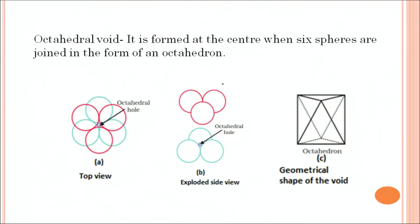The other one is we are putting one more layer over there. It is formed at the center when six spheres are joined in the form of an octahedron. So we can get octahedral void. You can see the geometrical shape of this void as well.